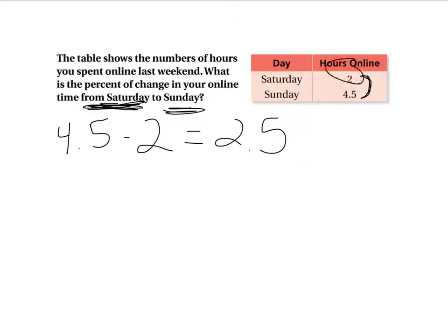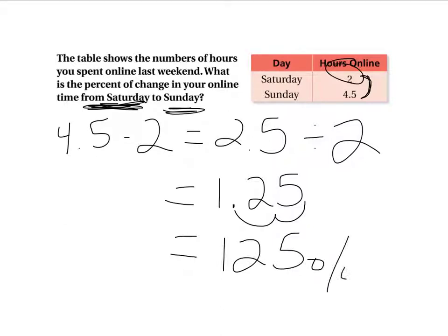From Saturday is my original total, so dividing by 2 is what I need to do. When I divide 2.5 divided by 2, I get 1.25. Now, that's not a percentage. I have to turn that into a percent. Remember how to do that - multiply by 100 or move the decimal two places to the right and it will become 125%. First example there.